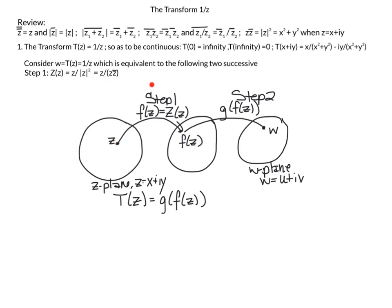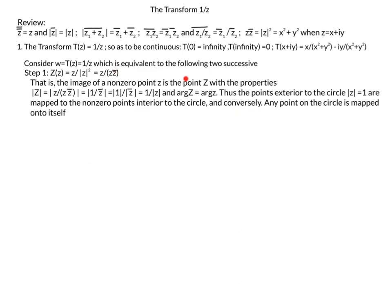Step one: capital Z operates on a complex number and equals the complex number divided by its modulus squared, which equals z over z times z-bar. The modulus of capital Z equals the modulus of z over z times z-bar, which simplifies to the modulus of 1 over z-bar, which equals 1 over the modulus of z. So once we map z to capital Z, the length of the resulting vector is exactly the inverse of the length of the original z, and the argument is preserved.